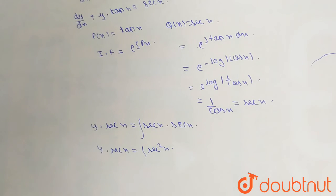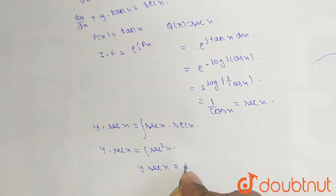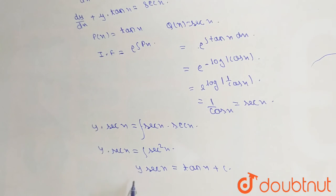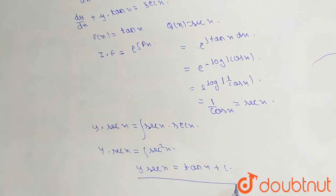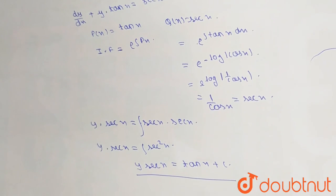As we know, the integration of sec squared x is tan x. So this will be y sec x equals tan x plus c. So this will be the general equation for the given differential equation. Thank you friends, hope you liked the video.